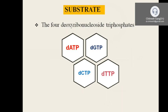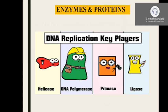DNA polymerases: In prokaryotes, there are three types. In eukaryotes, there are five types: alpha, beta, epsilon, gamma, and delta. Helicase unwinds double-stranded parental DNA into single strands. Primase (DNA-dependent RNA polymerase) synthesizes the RNA primer required before DNA synthesis can begin — without an RNA primer, DNA synthesis cannot occur.